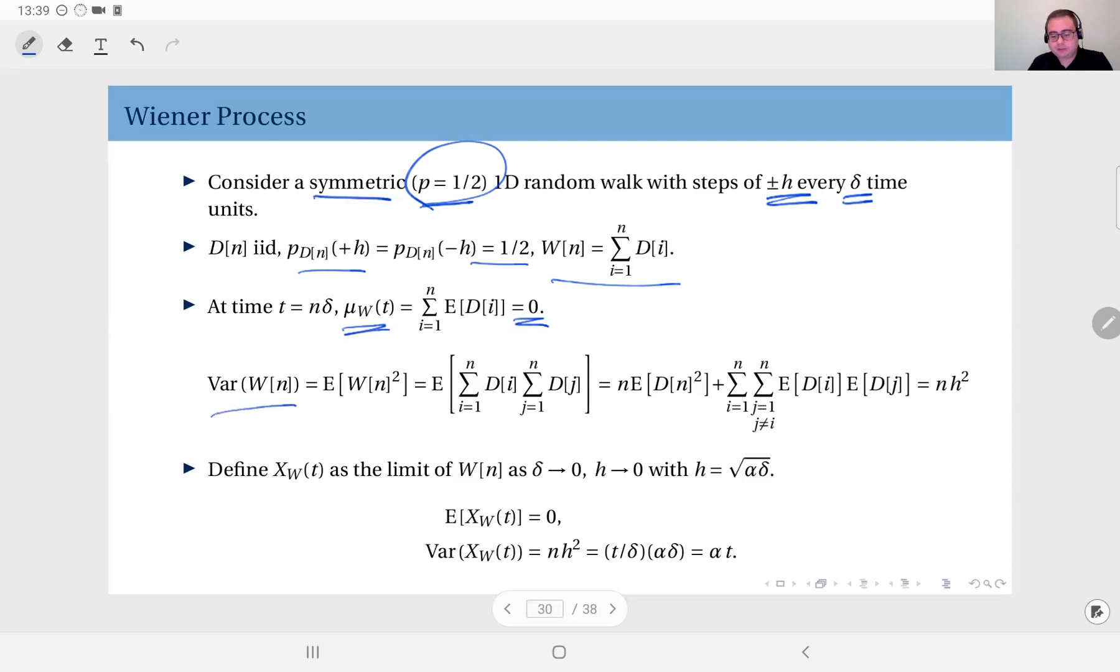What about the variance? Since the mean is zero, the variance equals the second moment. I can write the sum of steps from one to n multiplied by itself. I have n squared terms, but n of those will be square terms - D1 squared, D2 squared, D3 squared - and the remainder, n times n minus one terms, will be cross terms - D1 D2, D1 D3, D1 D4, and so on.